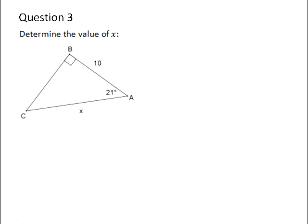Okay, so you are given a right angle triangle, and the angle that you are given within that triangle is 21 degrees.